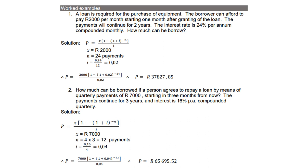So again, it is present value. x is 7,000, now remember n is 4 times 3, which is 12 payments. And of course, 16 divided by 100 is 0.16 divided by 4, because remember they said it is done quarterly, so you get 0.04. Put that into the formula, and use your calculator, and the answer should be 65,695 Rand and 52 cents.